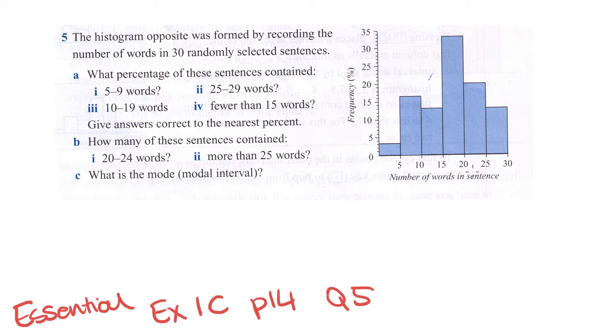We look at these intervals and you'll notice that between this point and this point, because this is the 5 mark, it's included in this interval. Between here and here you've got everything from 0 up to 4, so we're not going above the 5. The 5 gets included above and likewise the 10 gets included in this section. So 5 to 9 inclusive is within this bar.